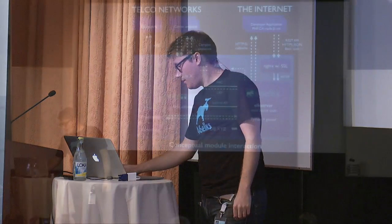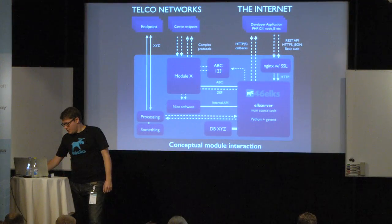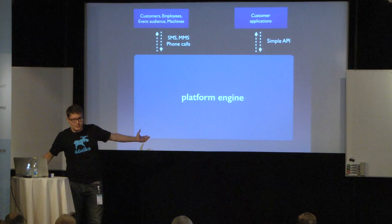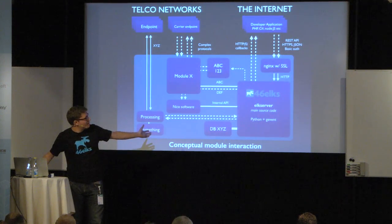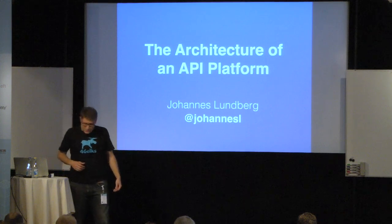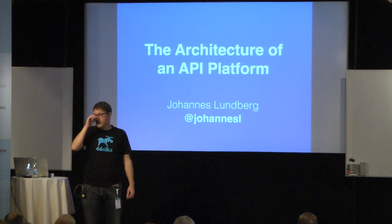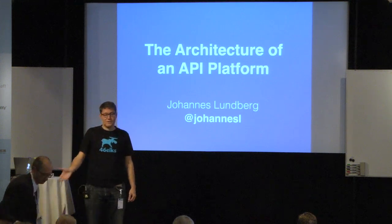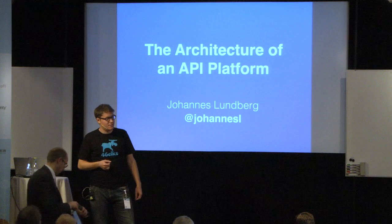But it's worth it — this is the complexity you're removing from your customers. A couple of technical notes: NGINX for SSL offloading is really good. We're using Python and gevent for our API backends — that's a very nice technology to use as well. This is what you deliver to your customers and what it can look like in the backend. Questions will be taken afterwards, so I'll leave the time for the next speaker.